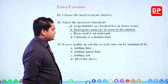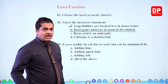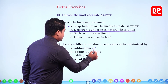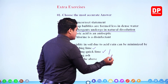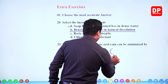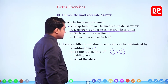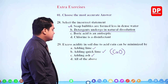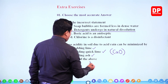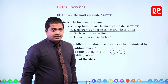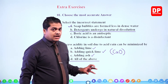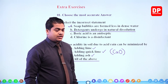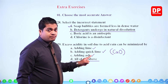Next: excess acidity in soil due to acid rain can be minimized by — lime, quick lime, ash, or all of the above. To minimize acidity in soil, we need to add a base. Lime is a base — correct. Quick lime (CaO, calcium oxide) is also a base — correct. Ash is also a basic substance — correct. All of these ways can minimize acidity in soil. Farmers often add lime, quick lime, or ash into the soil before cultivation to minimize acidity.